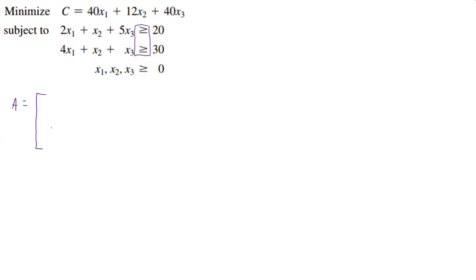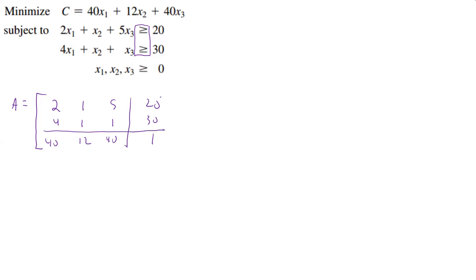We just start with our subject-to constraints here. We have a 2, a 1, a 5, and a 20. And we have a 4, a 1, a 1, and a 30. And then we use the top row: we have a 40, then a 12, and then a 40, and we call that a 1. Conventionally, this is how it's going to look.